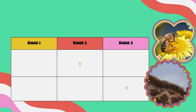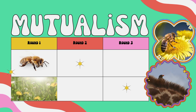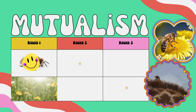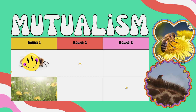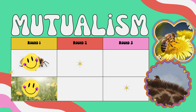Here are some examples. In round one, we have the bee and flowers. Bees get nectar from flowers for food, and they carry the flower's pollen around to pollinate the flowers so that they can grow. They both benefit — the bees benefit and the flowers benefit. That's mutualism.